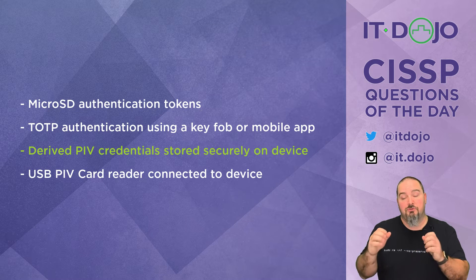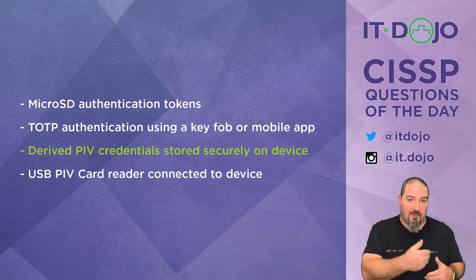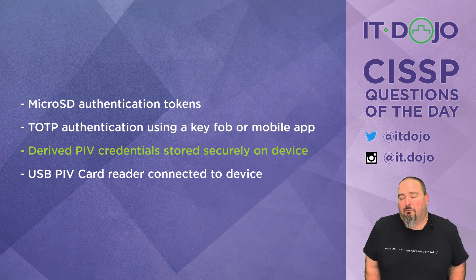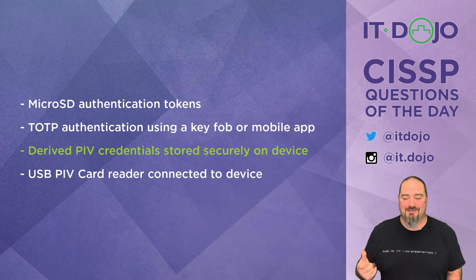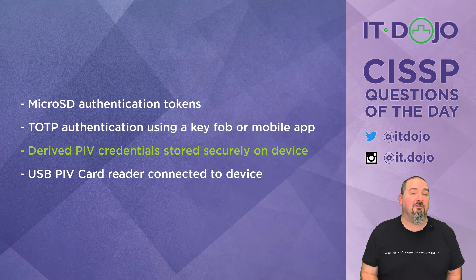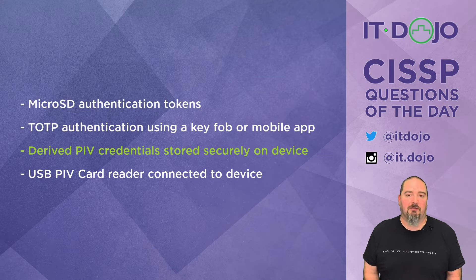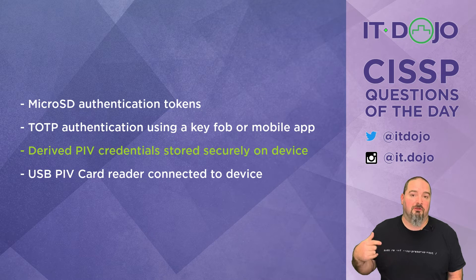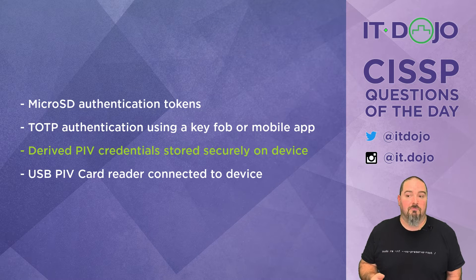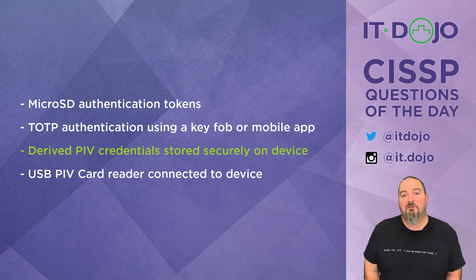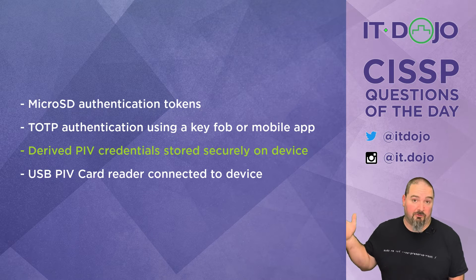The result is that you leverage your existing PIV card implementation to provision derived PIVs. Distilling it down, a derived PIV is just another key pair whose certificate request is signed by the private key on your physical PIV card — that's where the trust comes from. It creates a virtual PIV rather than requiring a physical card on the mobile device, and it continues to evolve. Crucially, it leverages your existing infrastructure, which is exactly what the question asked for.